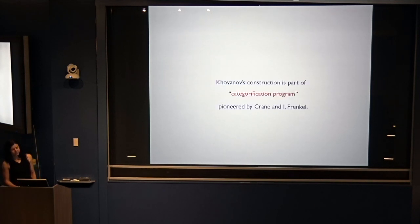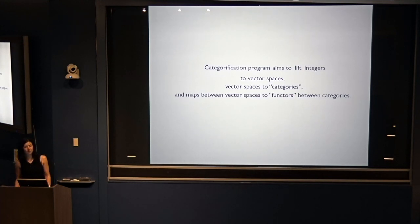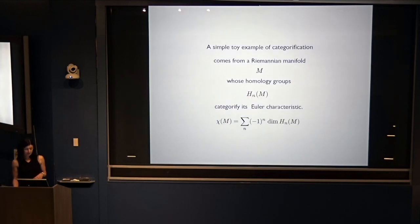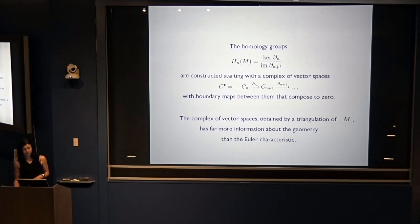Khovanov's construction is part of a larger program called the categorification program, pioneered by Crane and Igor Frenkel. This program aims to lift integers to vector spaces, vector spaces to categories, and maps between vector spaces to functors between categories. A simple toy example of categorification comes from a Riemannian manifold M whose homology groups categorify its Euler characteristic. The homology groups are constructed by starting with a complex of vector spaces with boundary maps between them that compose to zero. The complex obtained by triangulation of the manifold has more information about the geometry than the Euler characteristic or even the homology groups.